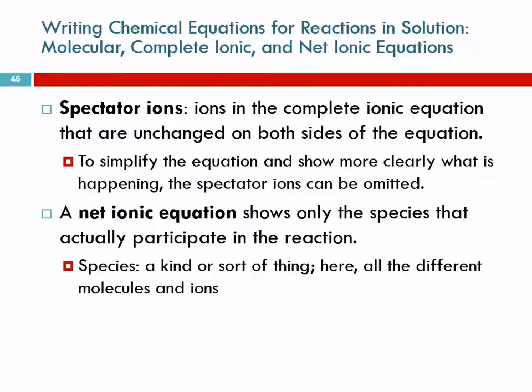When we look at that complete ionic equation, we often see that there are ions that are present on both sides of the arrow. They're present as a reactant, and they're present as a product. They're not changed. These are called spectator ions.